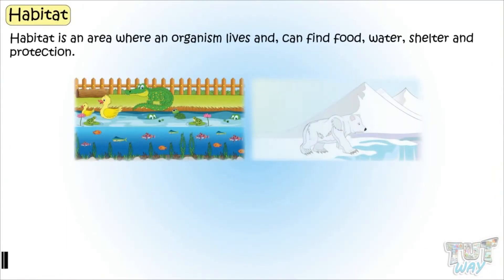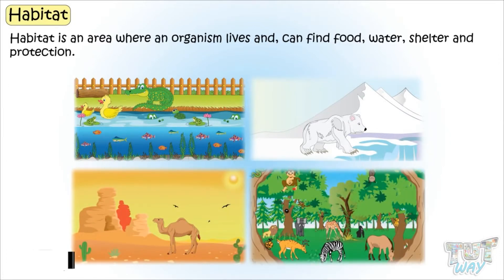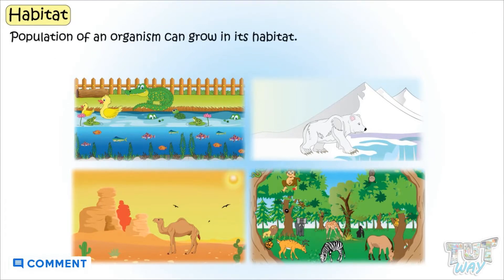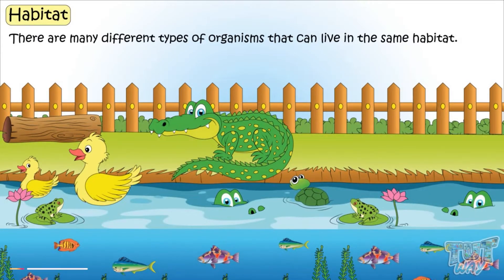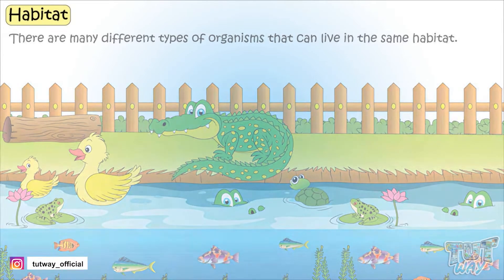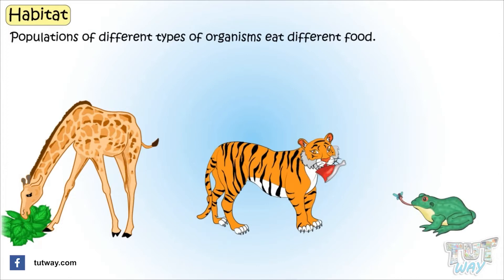Kids, we already know habitat is an area where any organism lives and it can find its food, water, shelter and protection. Population of that organism can grow in its habitat. There are many different types of organisms that can live in the same habitat, and populations of different types of organisms eat different food. And there is a flow of energy in a habitat.